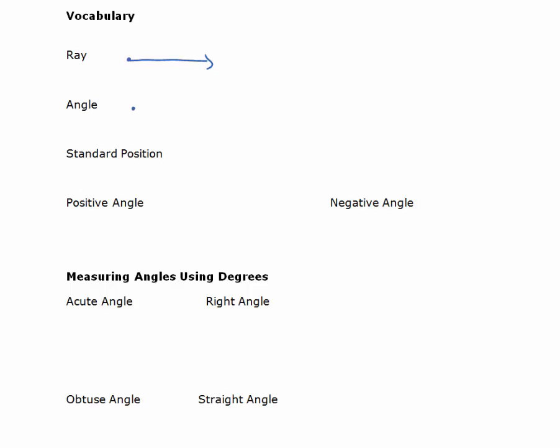An angle is made up of two rays that have a common endpoint, and that common endpoint is called a vertex.